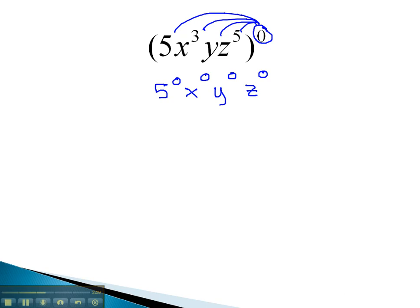Again, anything to the 0 power is 1, because 5 to the 0 means the 5's divide out, x to the 0 means the x's divide out, y to the 0 means the y's divide out, z to the 0 means the z's divide out. And all we're left with is 1 times 1 times 1 times 1, which also gives us the answer of 1.